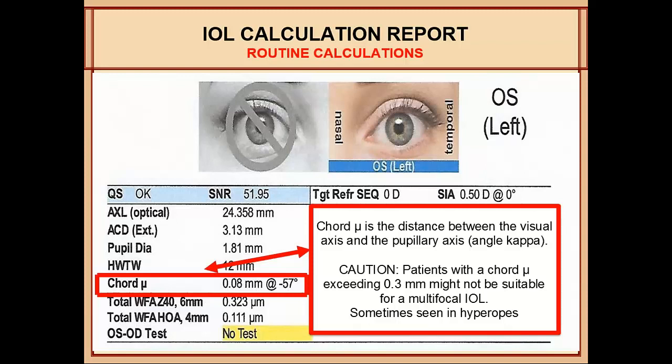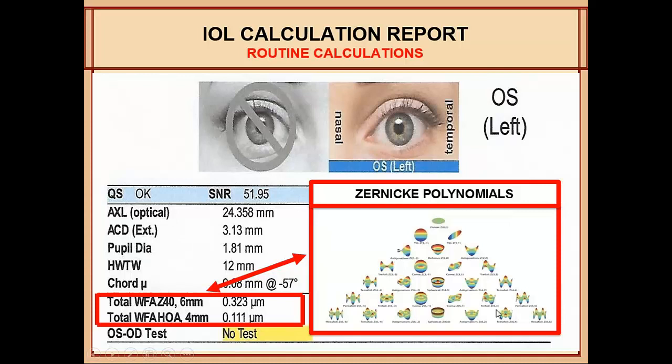The chord mu is the distance between the visual axis and the pupillary axis — what we call angle kappa. Patients with a chord mu exceeding 0.3 mm might not be suitable for a multifocal IOL because they will have aberrations. We see this mainly in hypermetropes. It's not very common but it's nice to have that information.